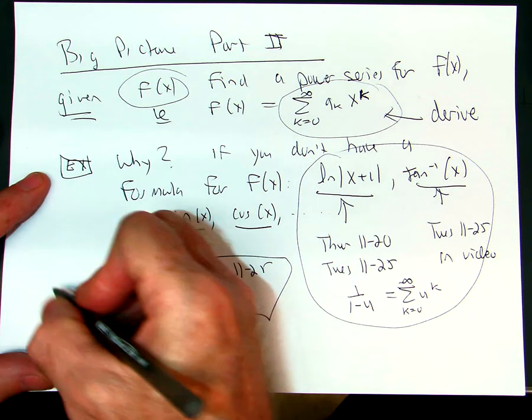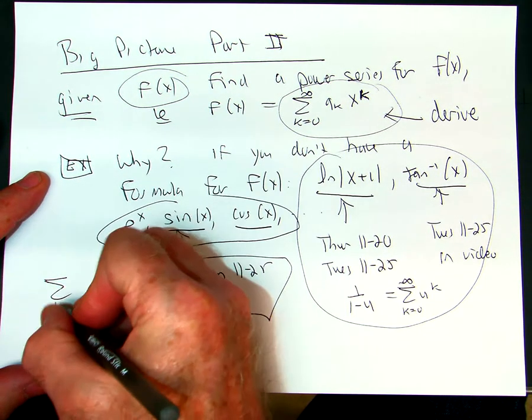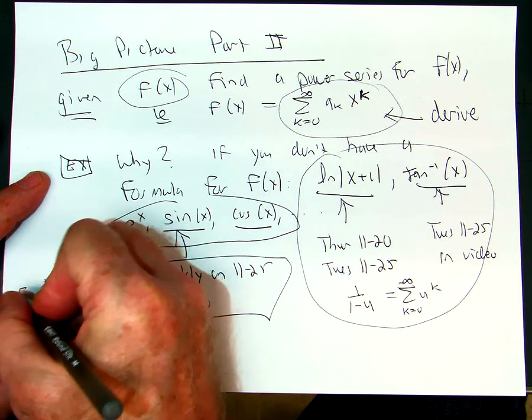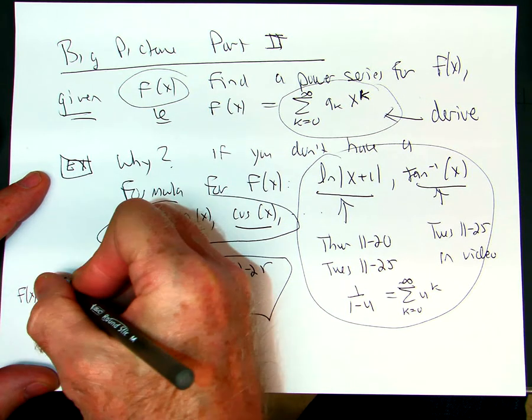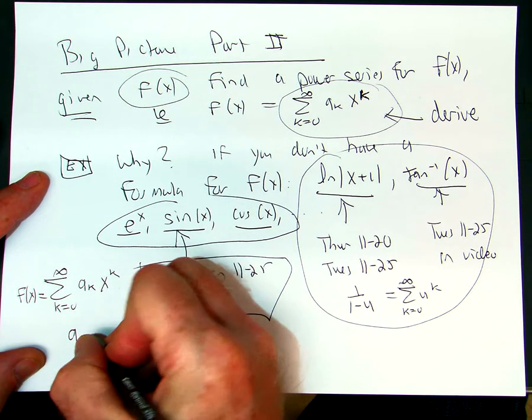For here, we're going to use something else for these three. We're going to use this. That f of x is equal to a to the k, x to the k. And we have a formula for a to the k.